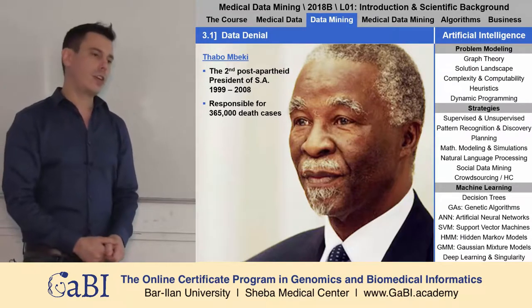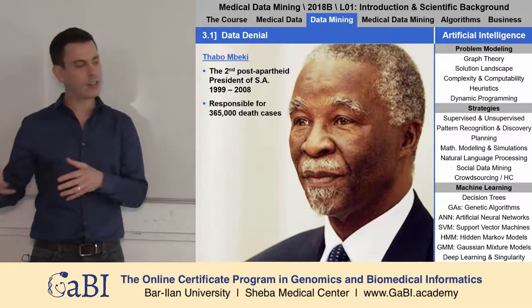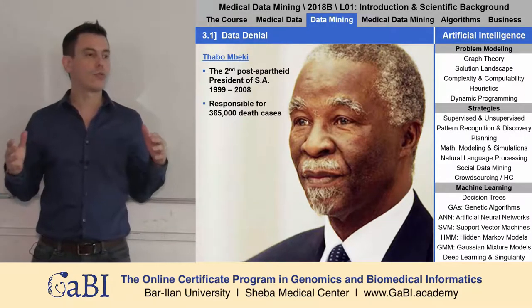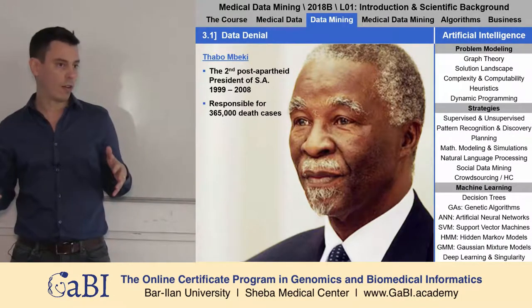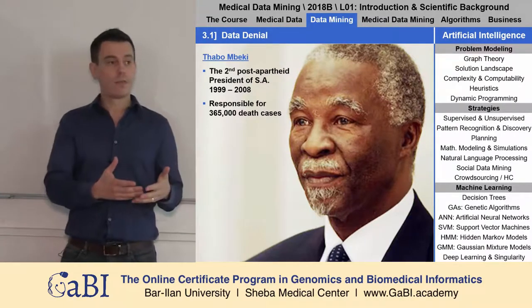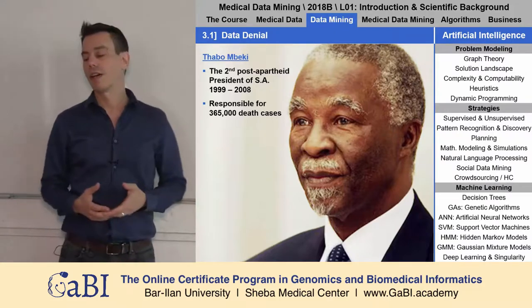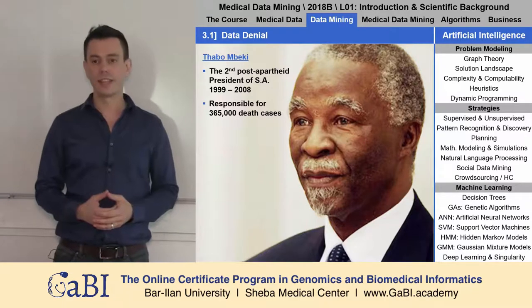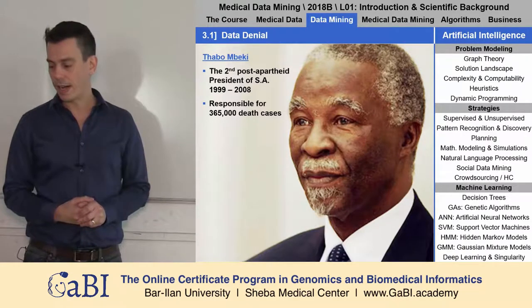Today experts say that he is responsible for the death of 365,000 people — HIV victims, HIV patients — because he had an advisor who said that the best way to treat HIV is with lemon juice and olive oil. All the data in the world that people gave him regarding retroviruses did not help, and he denied that data.